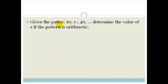Right, let's look at the next pattern. It says 16, x and 46. It says determine the value of x if the pattern is arithmetic. So what do we know? We know that T1 is 16, we know that T2 is x, and we know T3 is 46. Now the most important thing about an arithmetic sequence is that it has a common difference. And the common difference is defined as T3 minus T2 has to equal T2 minus T1.